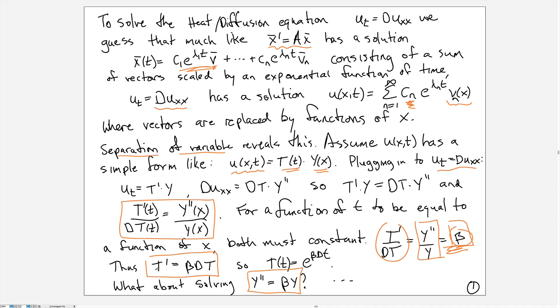The one for t is quick to solve. This is just a constant β times d, so we know it has the form T(t) = e^(βdt). Now let's think about solving the Y'' equation.